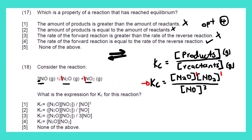Looking at our options, the first one is indeed the correct option. Option 2 has no exponent on the denominator. Option 3 has the molar ratio multiplied by the concentration, which is not correct. Option 4 does not consider the reactant, which is also wrong. None of the above is not valid because one of the options is correct — which is option 1.